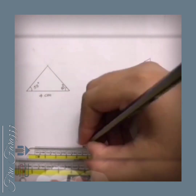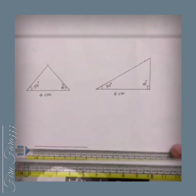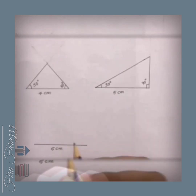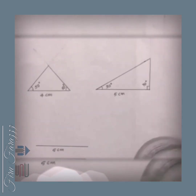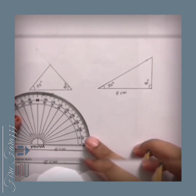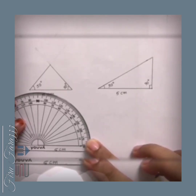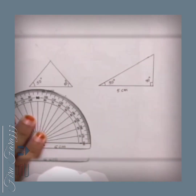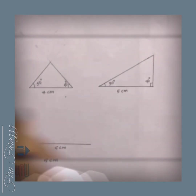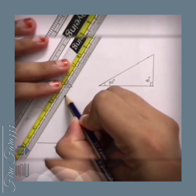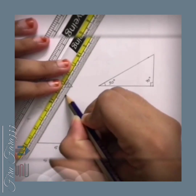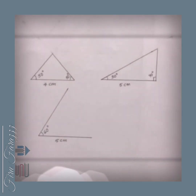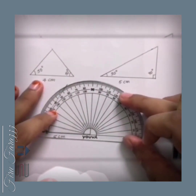Draw a line of length 5cm. Here it's 5cm. Then take the protractor — the given angle is 60 degrees, so mark a point at 60 degrees and draw a straight line using a ruler. Here it's 60 degrees.